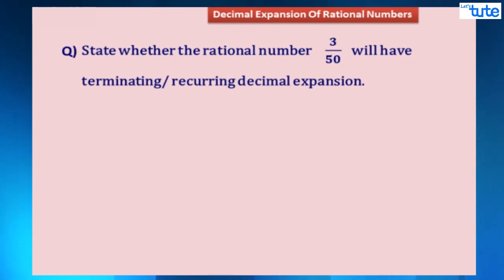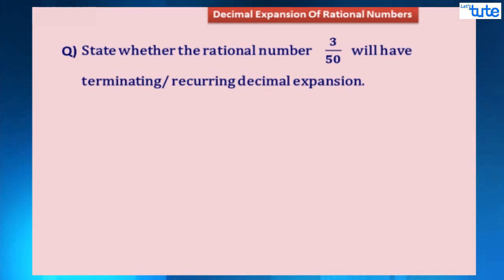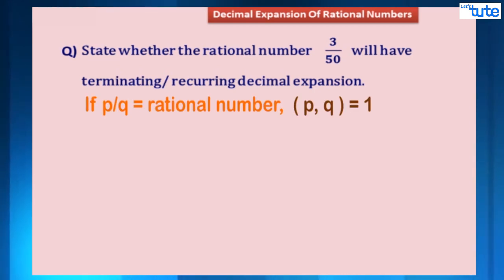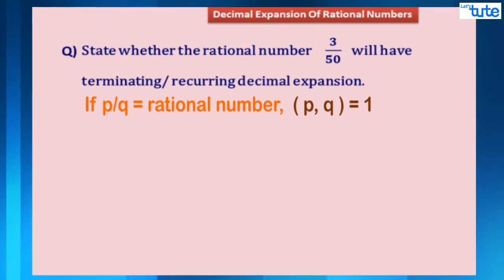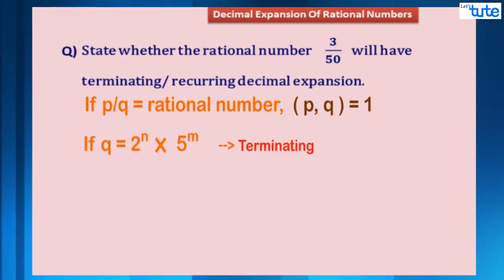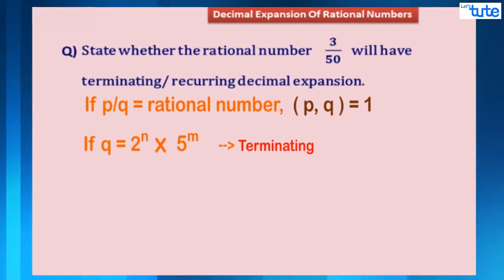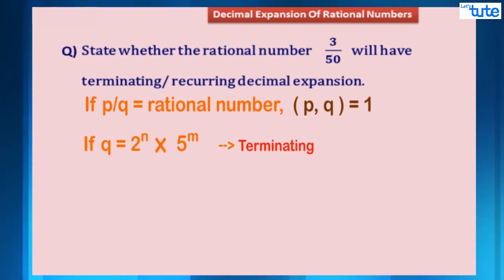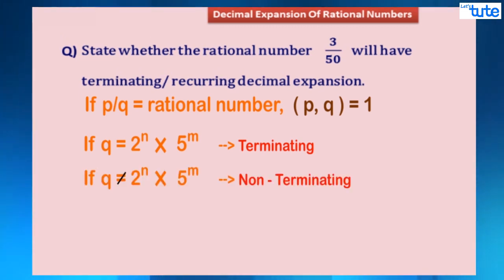Before I start with my solution, let me first explain: if a rational number p by q is given, where p and q are co-prime, and if the prime factorization of the denominator q is of the form 2 raised to n into 5 raised to m, where n and m are non-negative integers, then we can say that the decimal expansion of the rational number is terminating.